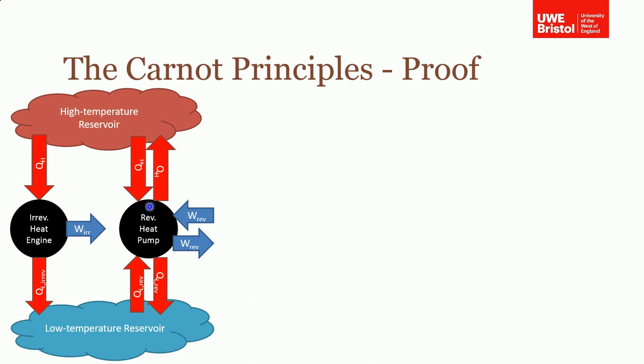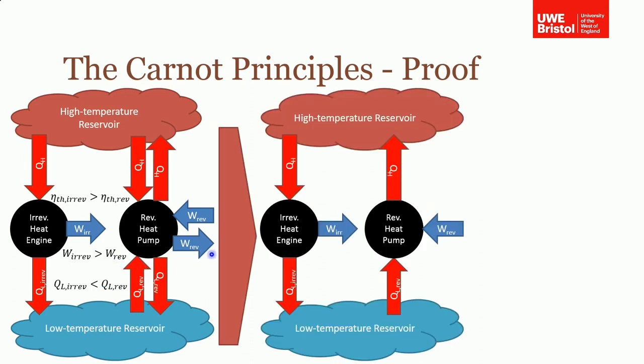So this is a proof by contradiction. What we're going to assume is that the efficiency of the irreversible heat engine is greater than the efficiency of the reversible one. Now if we do that, then the work being done by the irreversible heat engine is also greater than the work done by the reversible one. And also if that's true, then the heat being rejected by the irreversible heat engine has to be less than the heat being rejected by the reversible one.